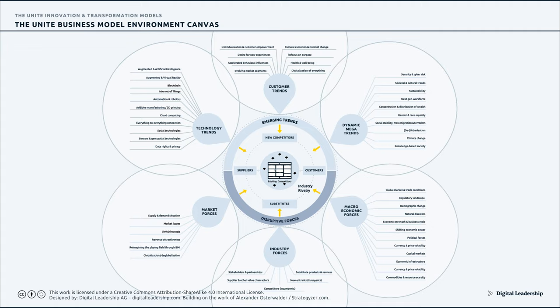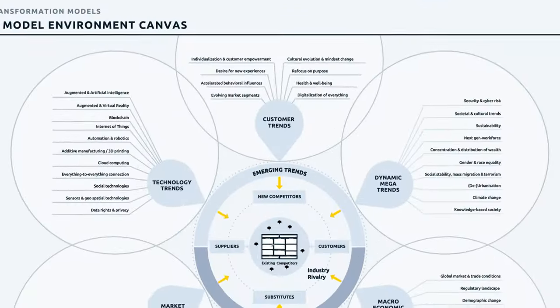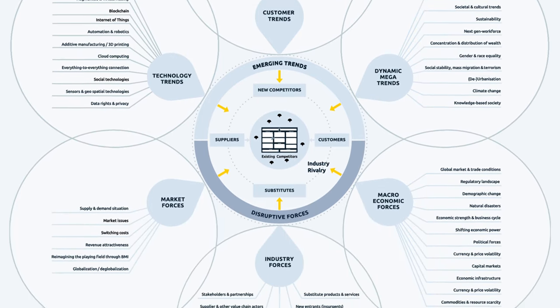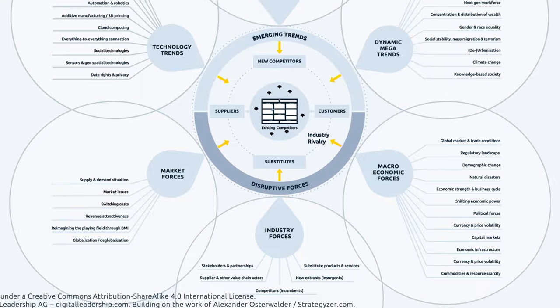Working with the UNITE Business Model Environment Canvas is simple. I would love to invite you to play the 'what if' game — go through the areas of each layer and ask yourself the tough questions. For example, how is an aging population affecting us? Regarding regulatory changes, what will change when this new rule or legislation comes into effect?